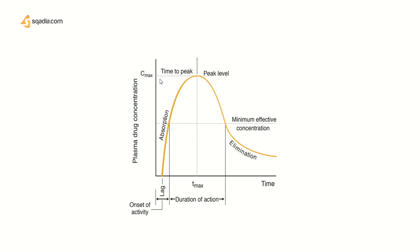C max is the maximal drug level obtained with the dose. T max is the time at which the C max is reached.